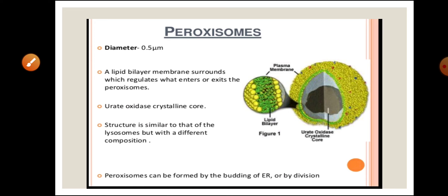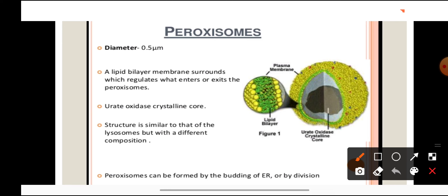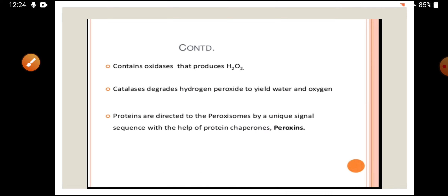The last cell organelle is peroxisomes. Peroxisomes are membrane-bound organelles with a central core made up of urate oxidase. The structure of a peroxisome resembles that of a lysosome, except that lysosomes contain hydrolytic enzymes whereas peroxisomes contain urate oxidase. Peroxisomes are also formed from the endoplasmic reticulum.